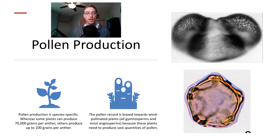Pollen production is species specific. Whereas some plants can produce 70,000 grains per anther, others can only produce up to 100 grains per anther. We can see a couple examples of what those pollen grains look like on the right hand side here. So the pollen record is biased towards wind pollinated plants, so all gymnosperms and most angiosperms, because these plants need to produce vast quantities of pollen to try and fertilize their offspring or other members of their population elsewhere. You have to flood the air with this pollen in order to effectively procreate.